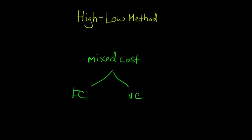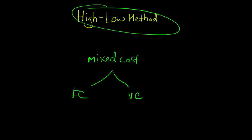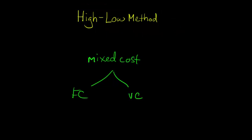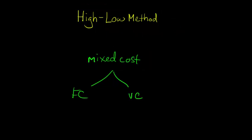One way of determining and figuring that out is called the high-low method. It's just a way we're going to be able to estimate and break out the different components of this mixed cost so that we can measure them.